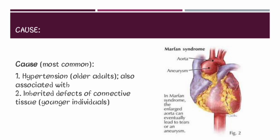The second cause is inherited defects of the connective tissue, which are more common in younger individuals. Examples include Marfan syndrome and Ehlers-Danlos syndrome. These classically lead to weakness of the connective tissue in the media, which is known as cystic medial necrosis.